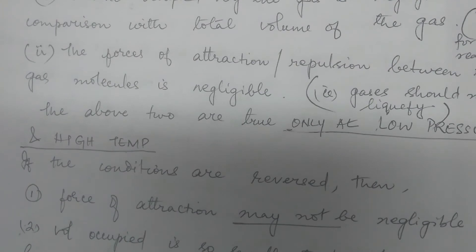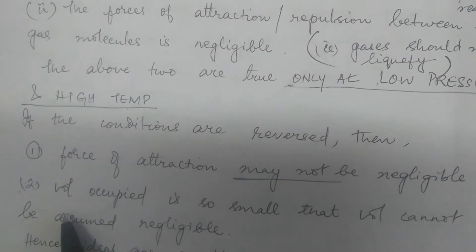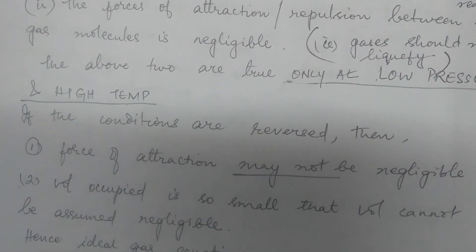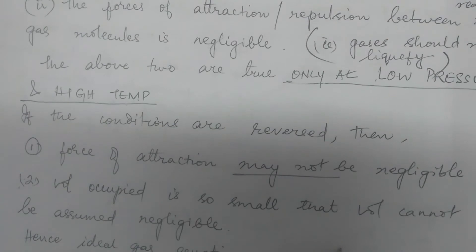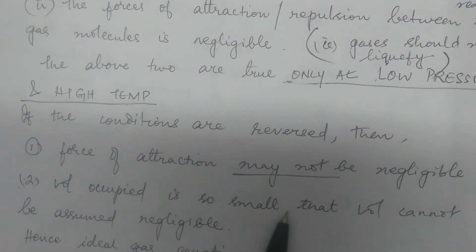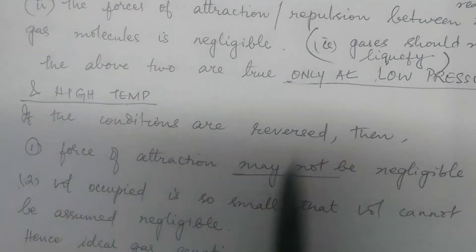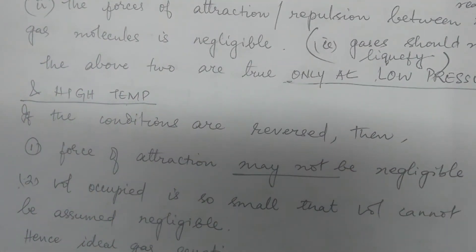Similarly, the volume occupied by the molecules is so small that it cannot be assumed negligible. For example, if 10 ml is occupied by all the molecules and the container volume is 1 liter, that 10 ml cannot be neglected. If it were 0.1 ml in 10 liters, it could be neglected — but not in this case. Because of all these behaviors, the ideal gas equation had to be modified.